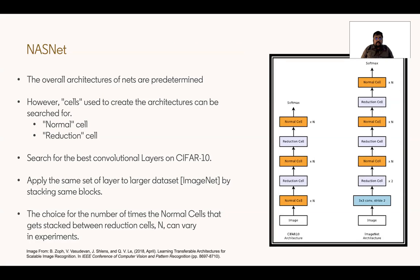The overall architecture for NASNets is predetermined — for CIFAR-10 and ImageNet, the authors predetermined what the architecture looks like. However, in the architecture, there are two kinds of cells: one is normal cell, and the other is reduction cell. The normal cells do not reduce the dimensionality of the input data, whereas the reduction cells do. What can change in these architectures is what the cells consist of, and this search for what the cells look like is done on CIFAR-10 and then applied on a larger dataset, ImageNet, because that is more efficient.